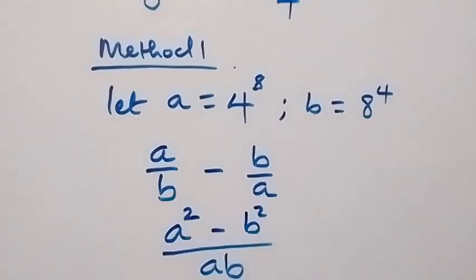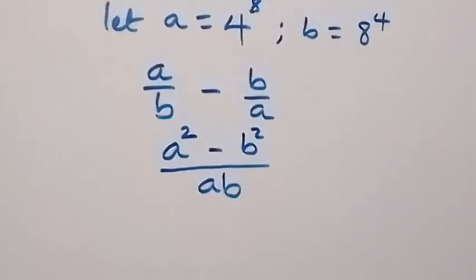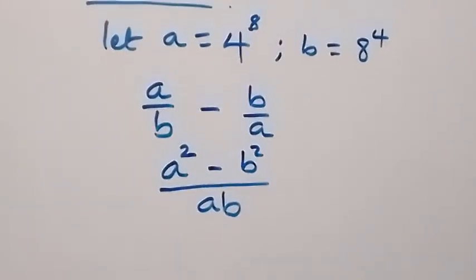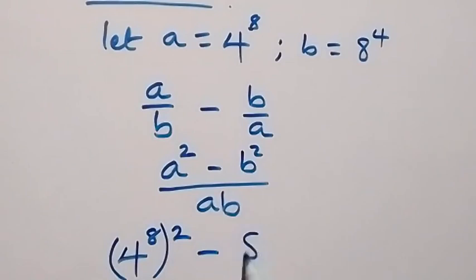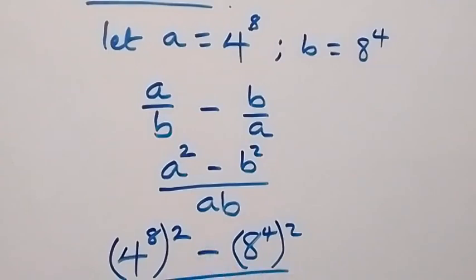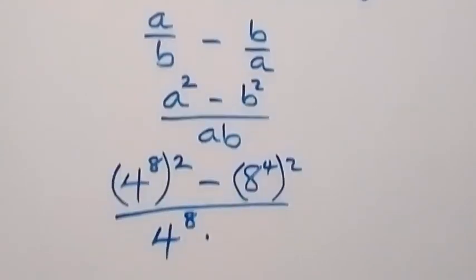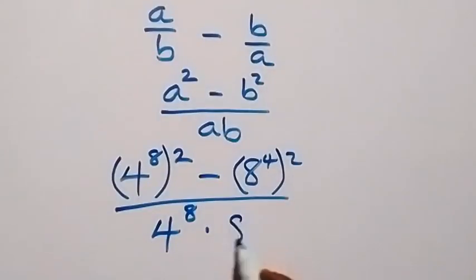In the next step, we can replace what we have as a and what we have as b. So this becomes 4 raised to power 8, squared, minus 8 raised to power 4, squared, all over ab, that's 4 raised to power 8 times 8 raised to power 4.